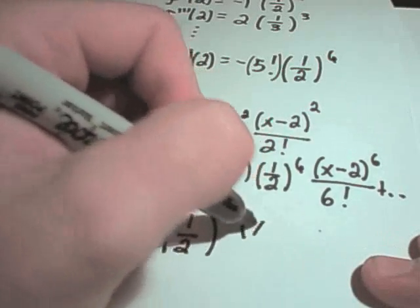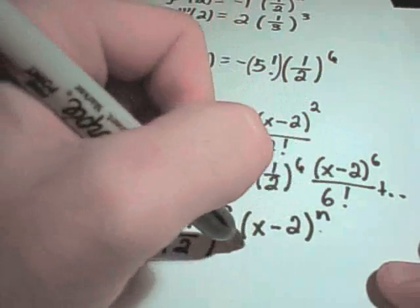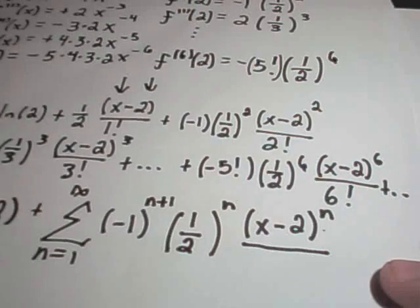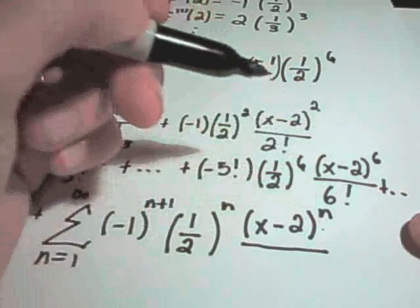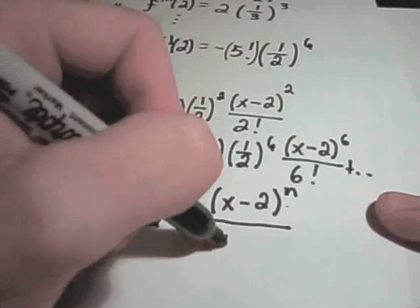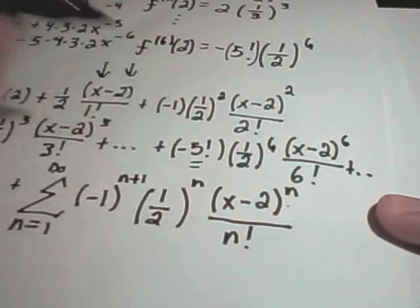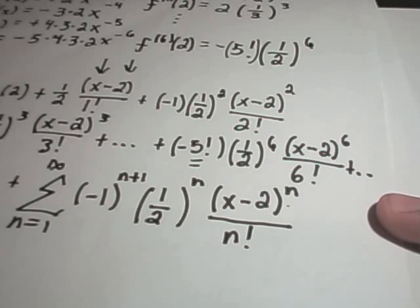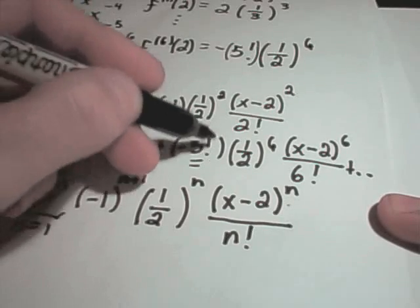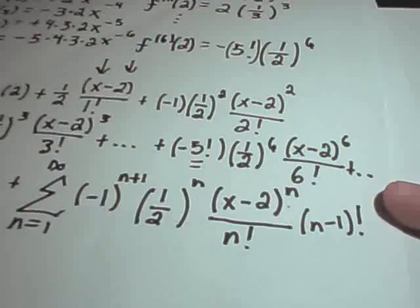All right, then after that, it looks like we have powers of 1 half in there. And, every time I have 1 half, and whatever term I'm at, that's how many 1 over n's I have. So, I'll have 1 over 2 to the n power. And, then it looks like I've got x minus 2 to the n power. And, then in the denominator, if I'm at the nth derivative, I'm at that same thing, factorial. But, I don't want to forget about my factorials out front, either.